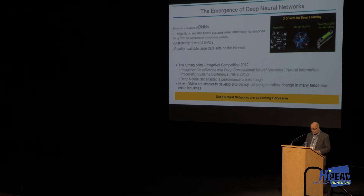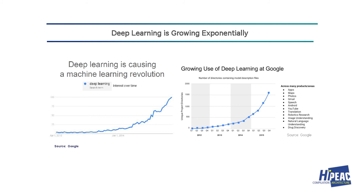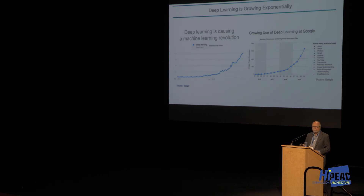Deep neural networks are becoming quite pervasive. The chart on the left — from Google — shows the number of searches for the term 'deep learning' from 2010 to 2014 and beyond: exponential growth. The right side shows the growing use of deep learning within Google across a variety of areas you wouldn't have thought about — because of the efficiency. Because of this need, Google decided to build their own ASIC called the TPU, which allowed them to run certain applications on the TPU instead of burning CPU cycles, deploying fewer servers and driving energy and acquisition costs much lower.